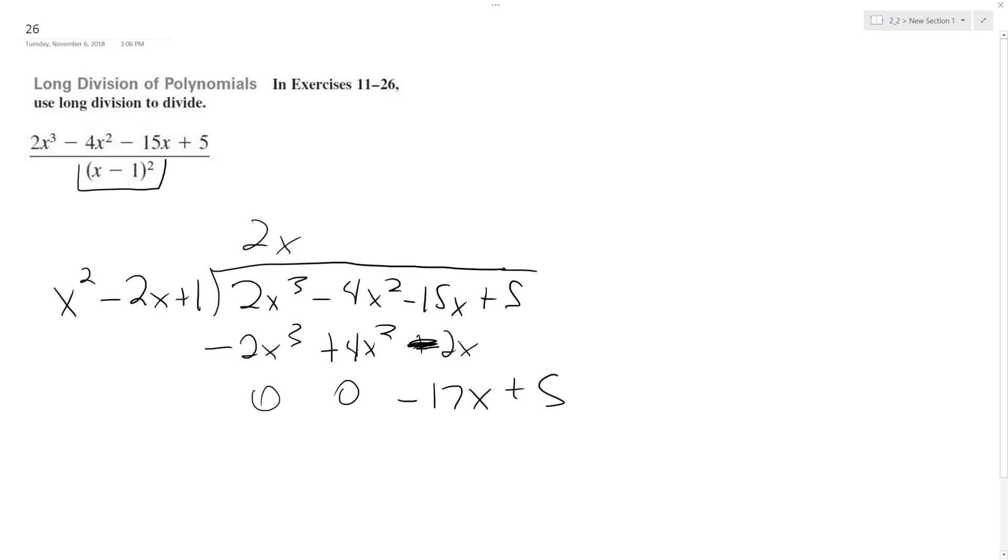x squared can't go into 17x unless we did like 1 over or something. So our solution is 2x and then our remainder is minus 17x plus 5.